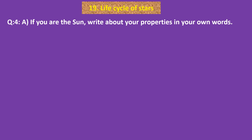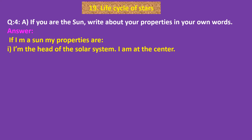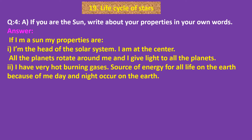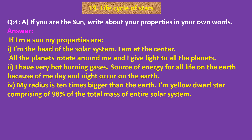Question number 4. A. If you are the sun, write about your properties in your own words. Answer: If I am the sun, my properties are: I am the head of the solar system and at the center — all the planets rotate around me and I give light to all the planets. I have very hot burning gases and am the source of energy for all life on earth. Because of me, day and night occur on the earth. My radius is 10 times bigger than the earth. I am a yellow dwarf star comprising 90 percent of the total mass of the entire solar system.